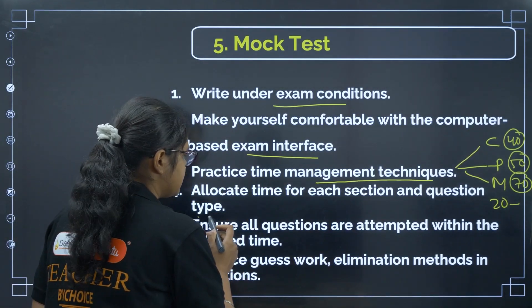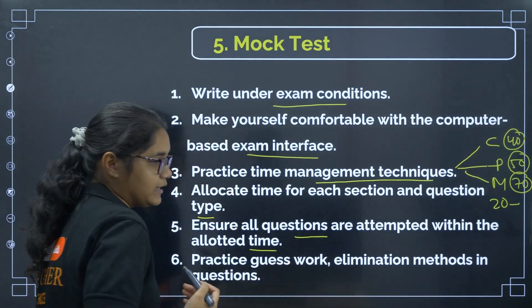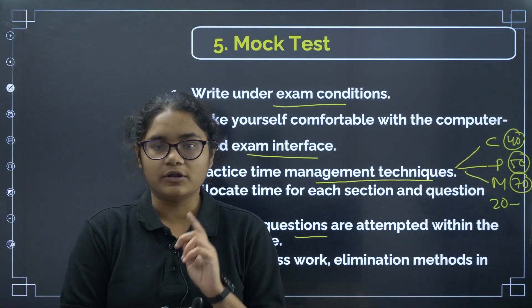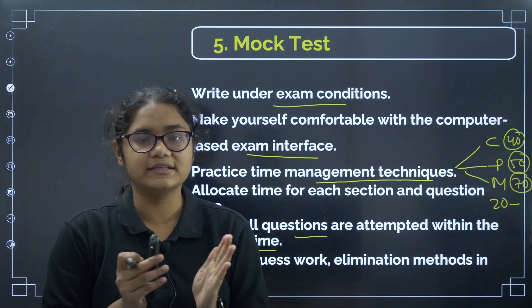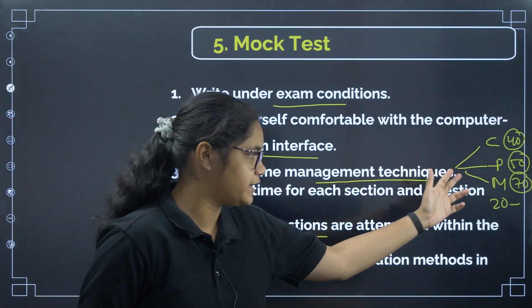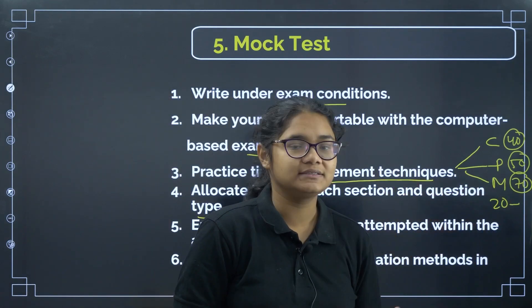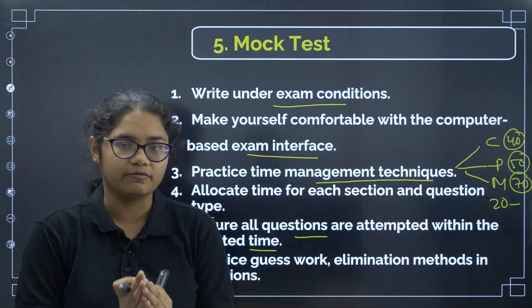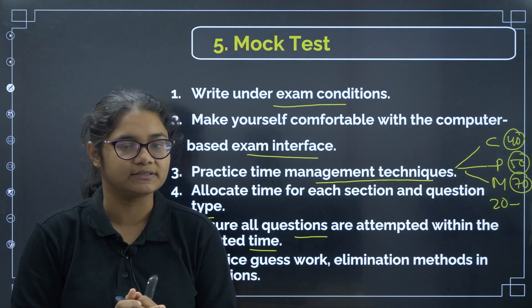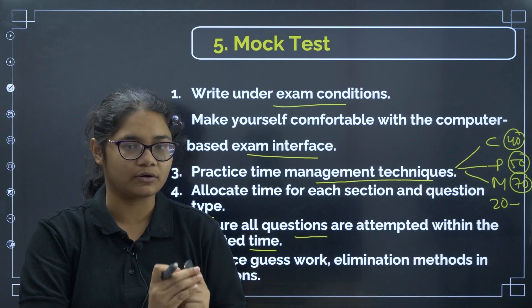Next is allocate time for each section and the question type that is there. Now ensure all questions are attempted in time. So whether you attempt or not you should take care that at least you are able to read all the 60 questions in this 40 minutes, all the 60 questions of physics in the 50 minutes and all the 60 questions from maths in 70 minutes. So whether you are able to attempt or not, whether you are able to solve or not but you must check all the questions. That will keep a track that you are not wasting a lot of time in any particular question.